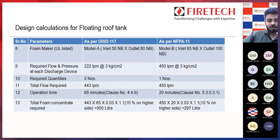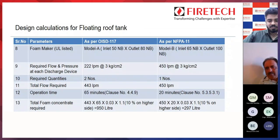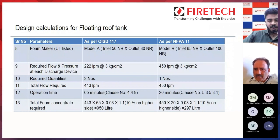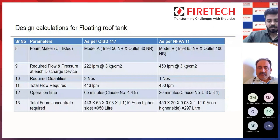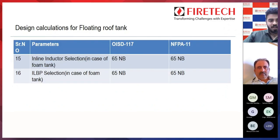For bladder tank capacity: 950 litres is not a standard size, so 1000 litres is selected. For NFPA 11, 297 litres is not standard, so 300 litres is selected. The proportioner ratio controller size is 50 NB, based on total flow fitting the 50 NB model at 453 lpm and 450 lpm respectively. The same approach applies for foam tank with inline inductor or ILBP. Referring to manufacturer data sheets, 65 NB is selected for both inline inductor and ILBP.